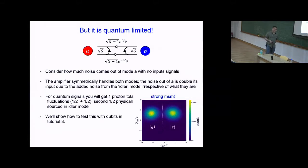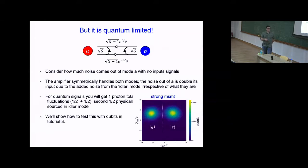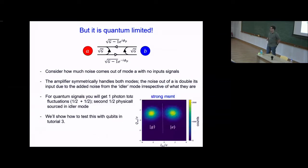To test this, calibration using qubits tracks the Gaussian distribution — measuring how wide it is versus how far separated the blobs are — to back out that these systems are very near the quantum limit. They're not quite there: the best systems are within a factor of two, adding roughly one extra photon rather than the minimum half photon.